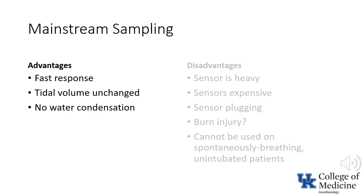Mainstream sampling provides a faster response. Other advantages include an unchanged tidal volume. With sidestream capnometry, the monitor aspirates gas from the circuit and transports it to the site of measurement, which obviously results in a reduction in delivered tidal volume.